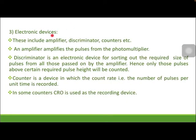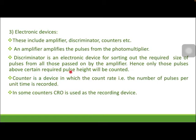The third part consists of the electronic devices, which include amplifier, discriminator, and counter. An amplifier amplifies the pulses from the photomultiplier. A discriminator is an electronic device for sorting out the required size of pulses from all those passed on by the amplifier; only those pulses above a certain required pulse height will be counted. A counter is a device in which the count rate — that is, the number of pulses per unit time — is recorded. In some counters, a CRO is used as an electronic counting device.